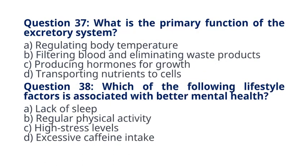Question 37. What is the primary function of the excretory system? A. Regulating body temperature. B. Filtering blood and eliminating waste products. C. Producing hormones for growth. D. Transporting nutrients to cells. The correct answer to question 37 is option B. Filtering blood and eliminating waste products. Explanation: The excretory system, including the kidneys and urinary system, filters blood to remove waste products and excess fluids.